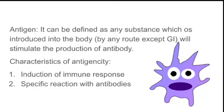The characteristics of antigenicity are two: induction of an immune response, and specific reaction with antibodies. When an antigen is introduced into our body, it first induces our immune response to produce antibodies, and then a specific reaction with the antibody occurs. Any antigen should trigger our immune response and cause our immune system to produce antibodies.